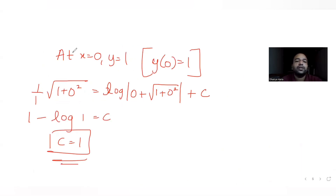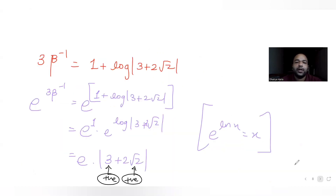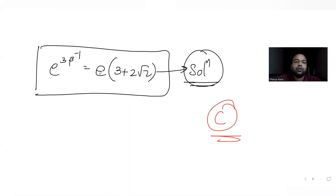Putting the second condition x = 2√2, y = β into the solution gave an equation in β. Taking exponential on both sides and simplifying, we obtained e^(3β⁻¹) = e(3 + 2√2), which matches option C. So C is the correct answer.